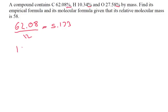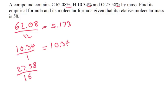Next up hydrogen, which is 10.34 divided by 1 — well that's just equal to 10.34. And then oxygen: 27.58 divided by 16 gives us 1.723. So we have carbon = 5.173, hydrogen = 10.34, oxygen = 1.723. Now let's divide by the smallest number, which would be oxygen.